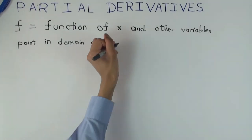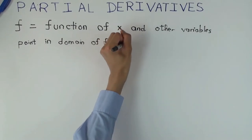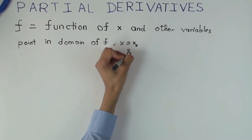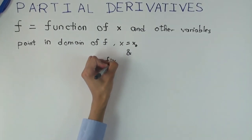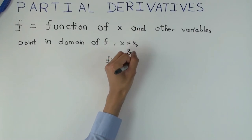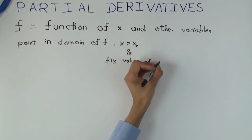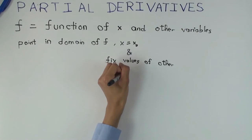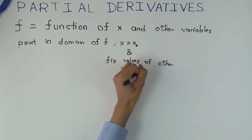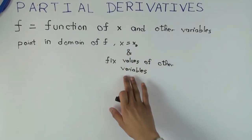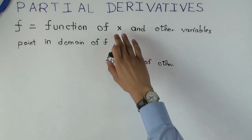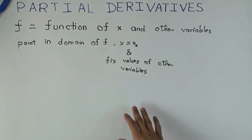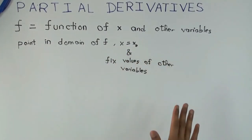To specify a point, let's say x equals x naught and the other variables are also fixed. So you have a point in the domain of f when the x value is given and the other values are also specified. For example, if it's a function of x, y, and z, then x is specified as x naught — which could be some number like 5 — y is specified as 12, and z is specified as 20. Basically, you have specified values for each of the inputs.